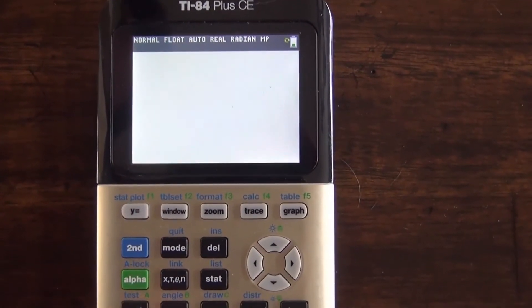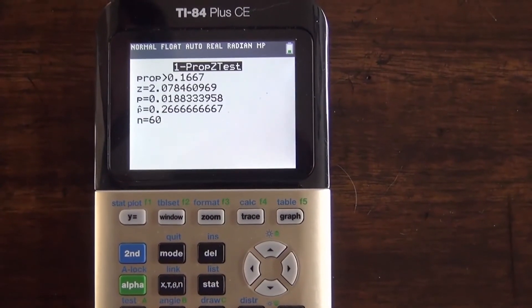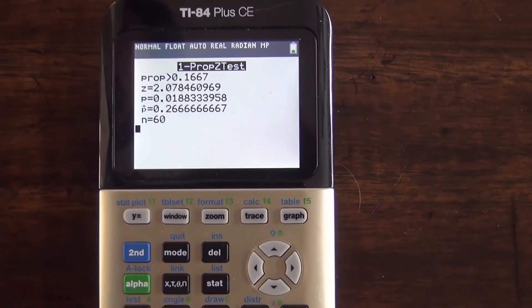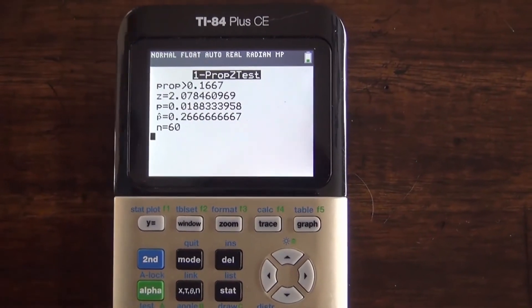Hit calculate and the calculator will give us the alternative hypothesis. It'll tell us the z-score, the p-value, it'll even calculate the sample proportion for us, p-hat.